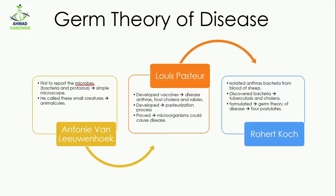When we talk about microbes, they are small microscopic organisms — you cannot see these without a microscope. He used a simple microscope, which was made by Antonie, to observe the microbes. He discovered bacteria and protozoa in his samples, and he called these small creatures 'animalcules'.